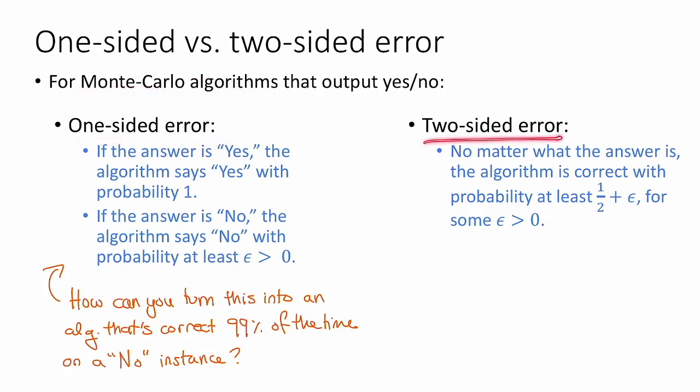We can also talk about two-sided error. So for an algorithm with two-sided error, the guarantee is that no matter what the answer is, whether or not the answer is yes or no, the algorithm is going to be correct with probability at least one-half plus epsilon for some epsilon strictly greater than zero. So again, this might seem like not very good. If epsilon is equal to zero, then I can always get an algorithm that's correct with probability one-half just by guessing randomly, right? And this is just a smidge better than that. But just as was the case with one-sided error, with two-sided error we can amplify our success probability by repeating a bunch of times.